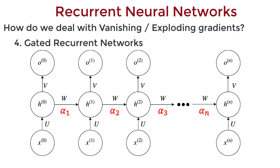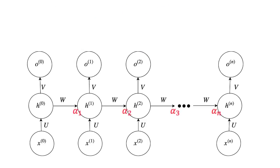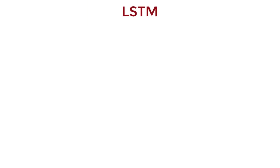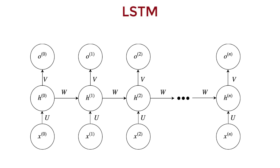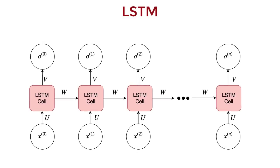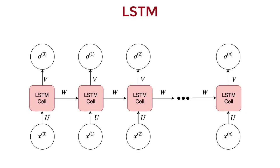One of the most commonly used gated recurrent neural network architectures is LSTMs, which stands for long short-term memory. Consider our vanilla recurrent neural network. Now, replace every hidden unit with something called an LSTM cell.